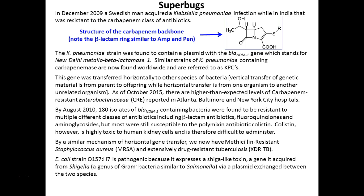The pathogenic strain E. coli O157:H7 is dangerous because it produces a shiga-like toxin. This toxin gets its name from Shigella, which produces a toxin that kills cells lining the intestines. This particular E. coli strain has a similar toxin — the belief is it probably acquired the DNA instructions from Shigella through horizontal gene transfer. This isn't common in E. coli normally, which is lucky since we all have E. coli in our gut.